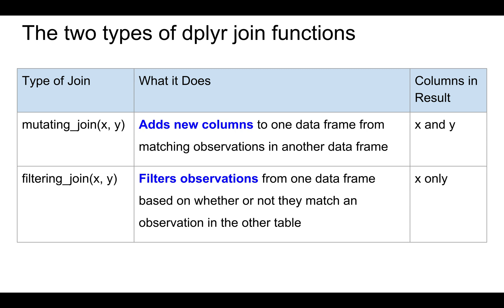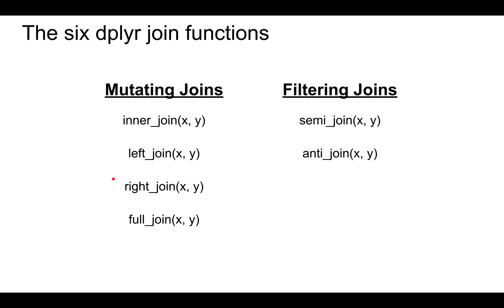Now let's talk about the two types of join functions in the dplyr package. The first type are known as mutating joins, because they create new columns — they add columns from y to the data frame x. On the other hand, a filtering join does not create new columns, but it reduces or filters the observations in x based on whether they match observations in y. Here are the six dplyr join functions that we will talk about in the next few slides.